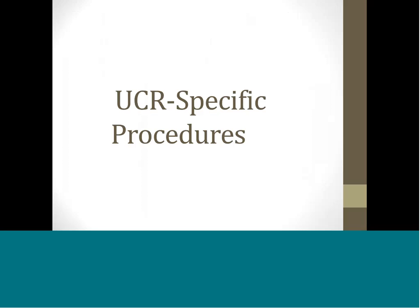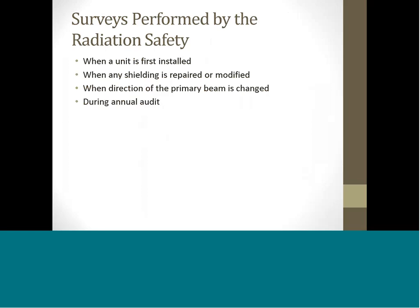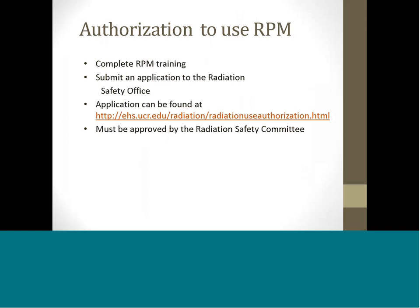UCR specific procedures. The Radiation Safety Office should be notified and a survey must be performed in the following cases: when a unit is first installed, when any shielding is repaired or modified, when the direction of the primary beam is changed, and during the annual audit. To become authorized to use radiation producing machines, first complete the online radiation producing machine training — there is no retraining requirement. Then submit an application to the Radiation Safety Office. The Radiation Safety Officer will contact you to set up an in-person meeting. The application will then be reviewed and approved by the Radiation Safety Committee.